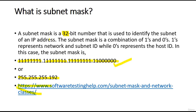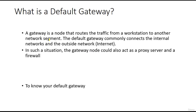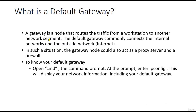What is a default gateway? Checking it is simple — open the command prompt and type ipconfig and you will get your default gateway. A default gateway connects the internal network to the outside network. It can also act as a proxy server and a firewall.